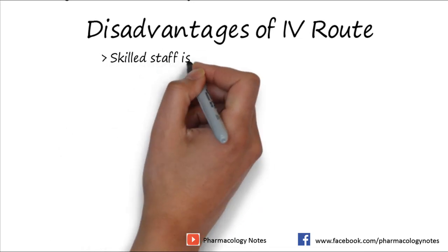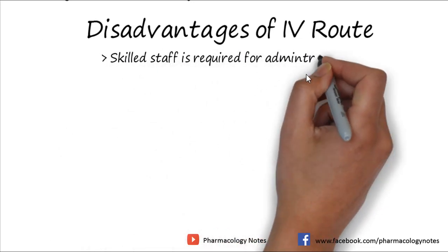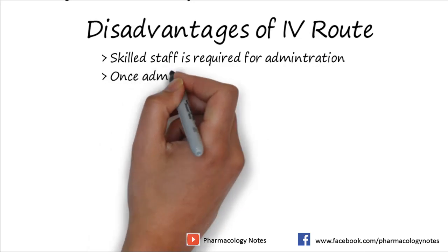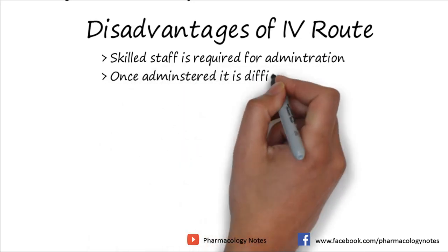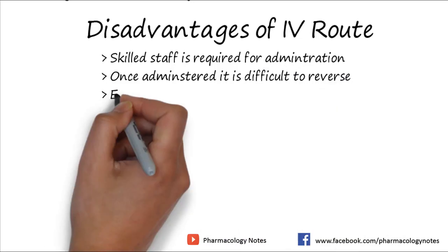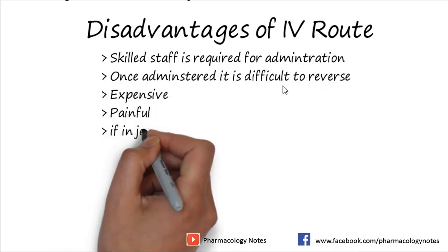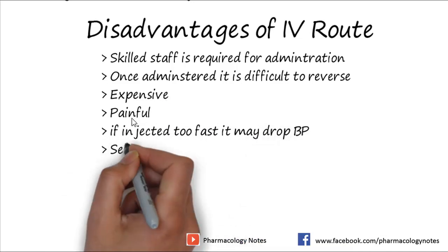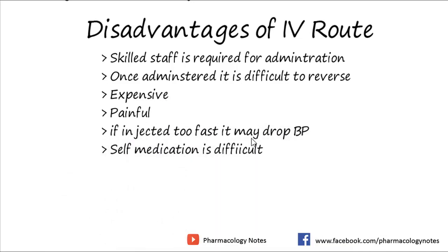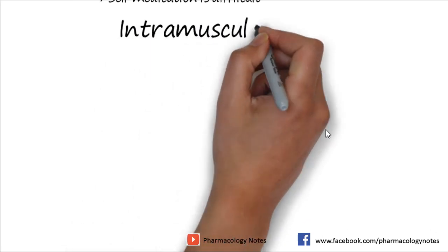The disadvantages of the IV route include: skilled staff or personnel is required for administration — no one can administer it to themselves; once administered, it is difficult to reverse because the drug has already entered the blood; it is expensive; it is painful; if injected too fast, it may cause a drop in blood pressure; and self-medication is impossible.